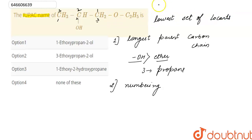So we'll choose the numbering in which substituent gets lower number. So the numbering starts from the carbon which has a substituent.